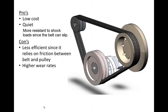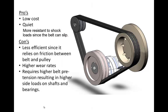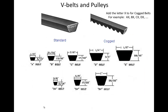The friction also causes these belts to have a higher wear rate, and because they rely on friction to transmit power, they require a much higher pre-tension, which results in higher side loads on the shafts and bearings. Here is a page in your brain book showing common V-belt sizes. You will notice that they are specified by letter sizes A, B, C, D, and E, and also by numeric V sizes such as 3V, 5V, and 8V.